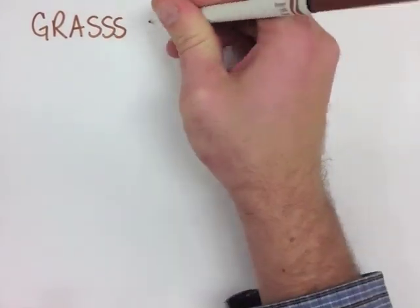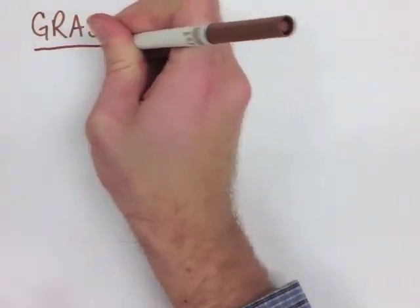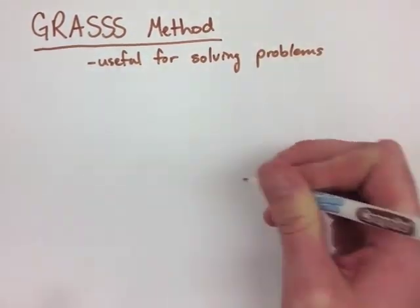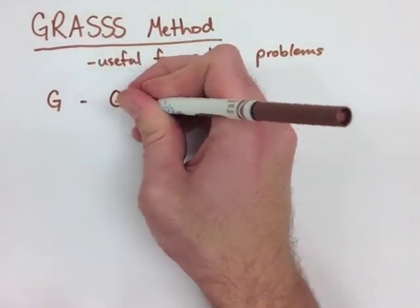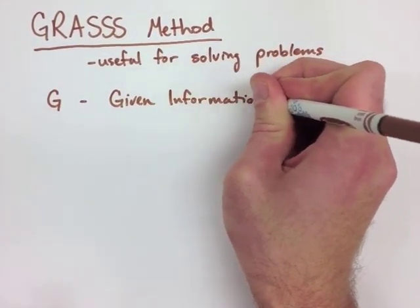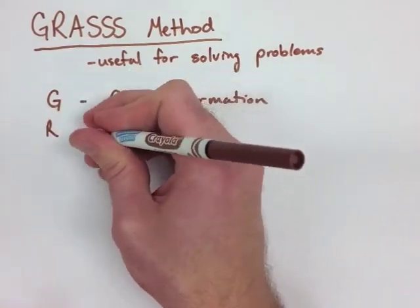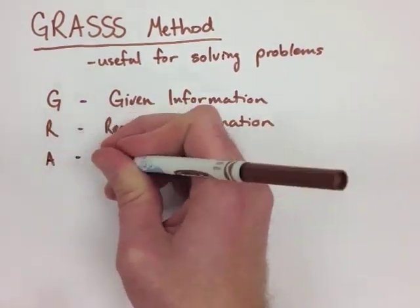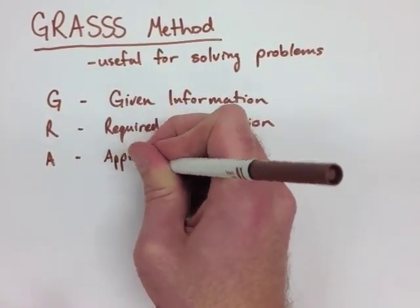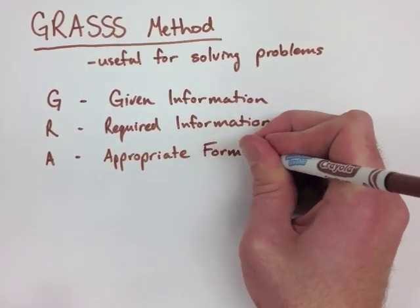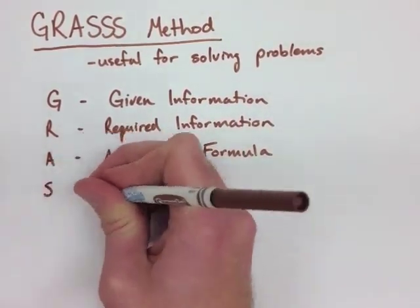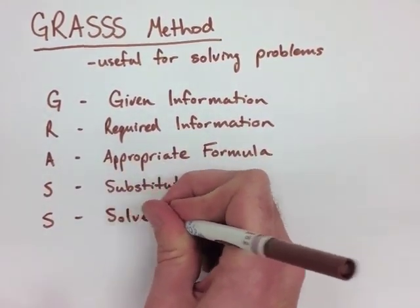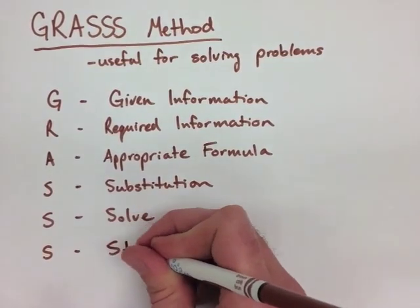All of these formulas can become very overwhelming. In physics, we use what's called the GRASS Method — it's very useful for solving problems involving all of these formulas. The first letter, G, stands for Given Information. The second letter, R, means Required Information. The third letter, A, is Appropriate Formula — it's very important that we use the right formula. The first S stands for Substitution, to put all of our information into the formula. The second S stands for Solve, and the final S stands for Statement.